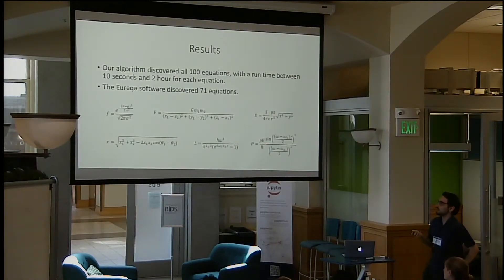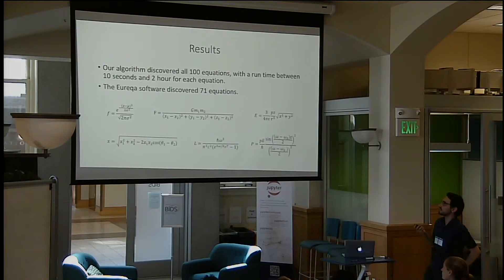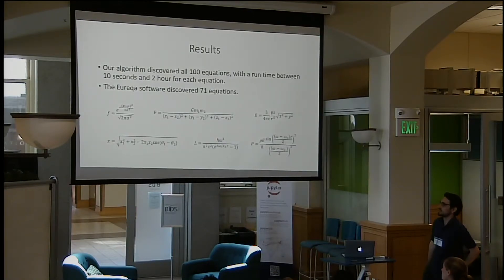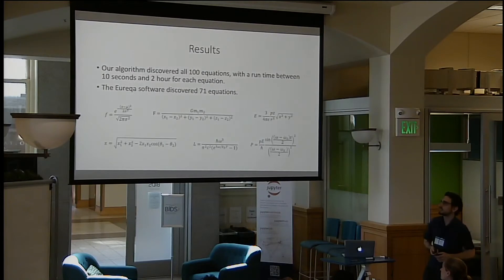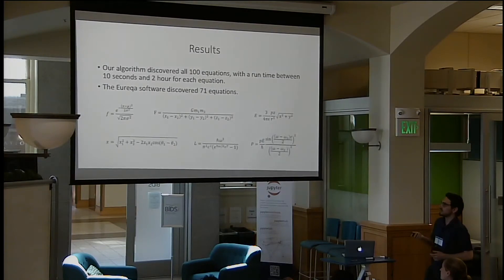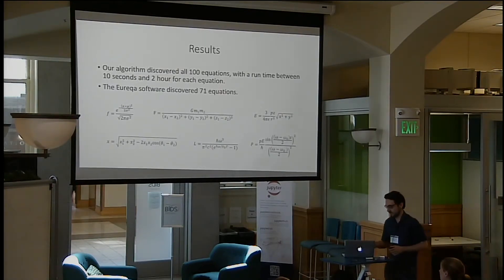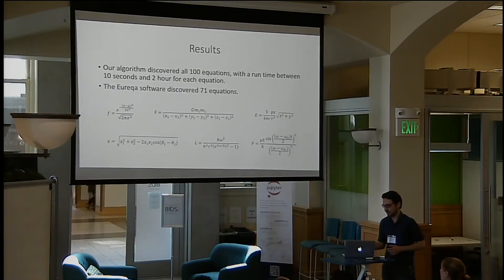We are able to solve all 100 equations from the Feynman lectures with reasonable run times between 10 seconds and two hours, while the genetic algorithm-based software Eureka was able to solve only 71 of these equations. The equations we solved that Eureka didn't all have properties that our neural network was able to take advantage of, reflecting the power of this approach compared to classical genetic algorithm methods.